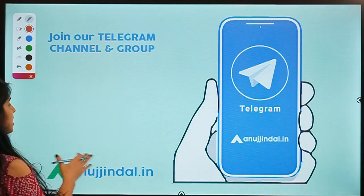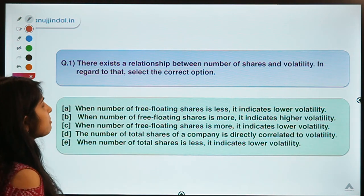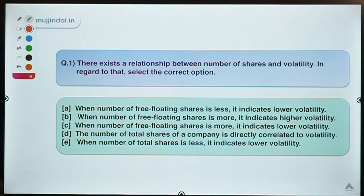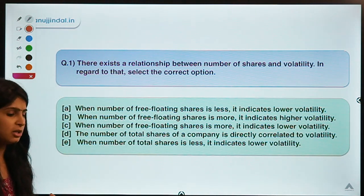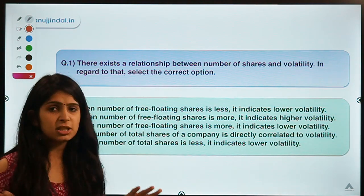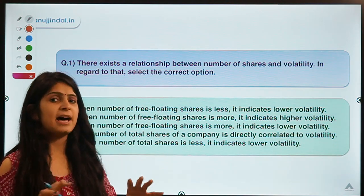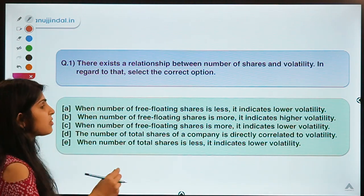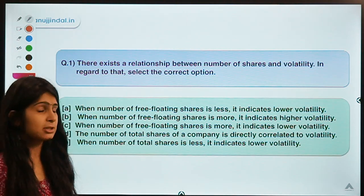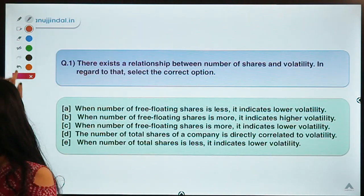Okay, question number one: there exists a relationship between the number of shares and volatility — select the correct option. We are talking about some sort of relationship that exists between the number of shares and the impact they have on the volatility of those shares. You have to select the correct option which defines the correct relationship between these two factors.